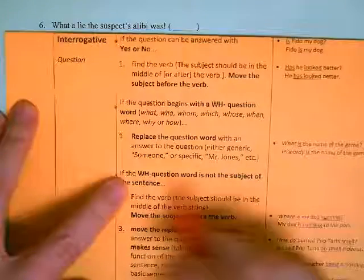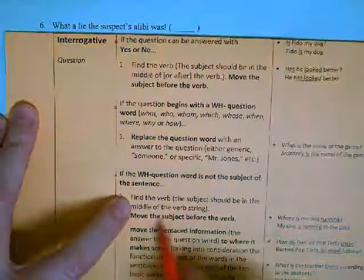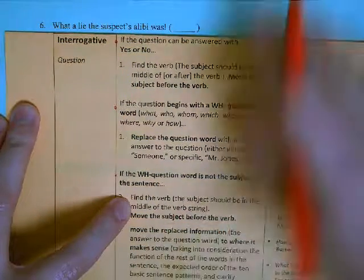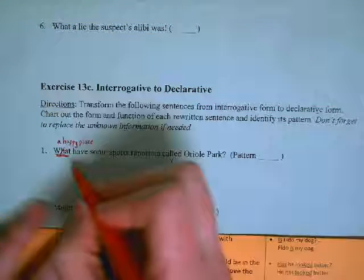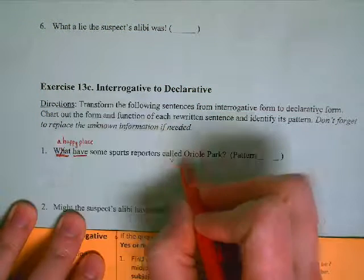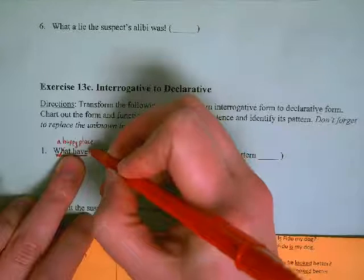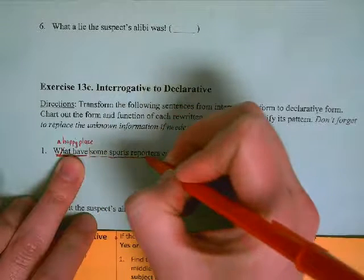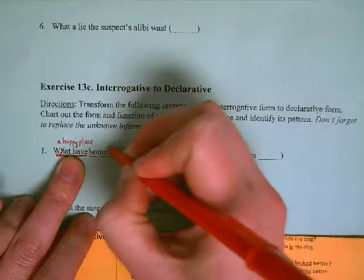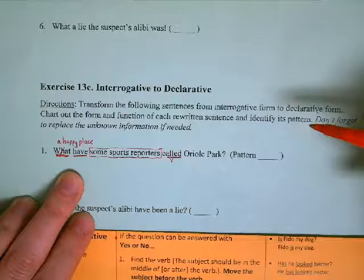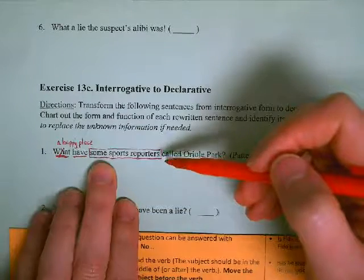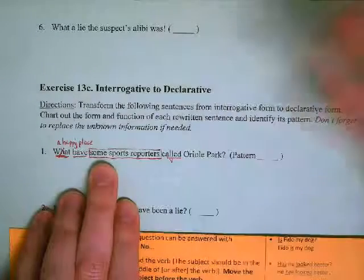So who's doing the calling? Some sports reporters. So it's not my subject. If it's not the subject, I need to define my verb and I need to move my subject before the verb. See how my verb here, 'have called,' is split up? This isn't an interrupting adverb; this is actually a whole noun phrase, my subject, that's in the middle of my verb.